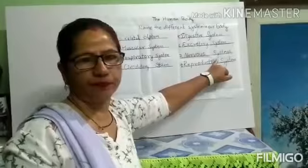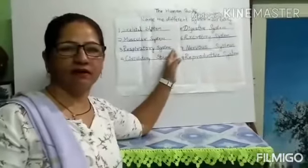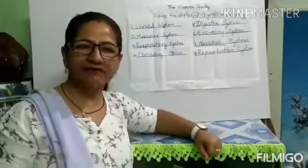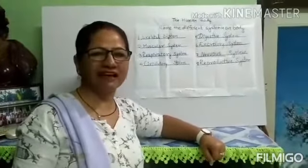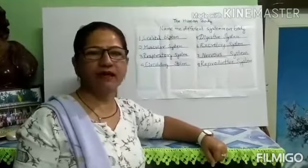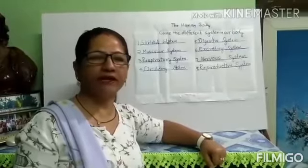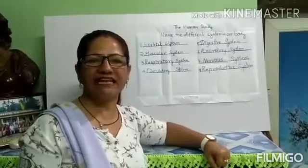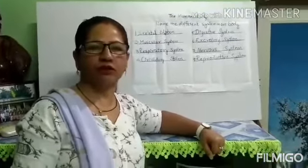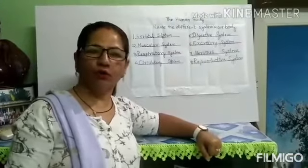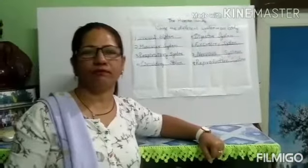The reproductive system is the system which helps in producing young ones. Both males and females have different reproductive systems. A mother giving birth to a baby is the way through which new ones are born.